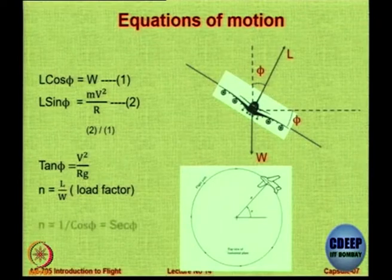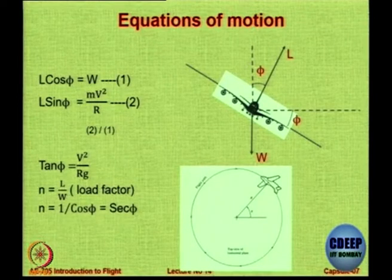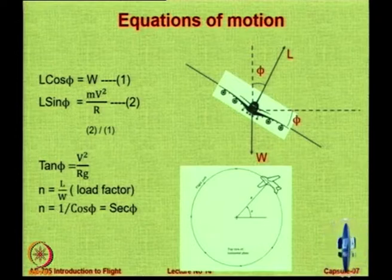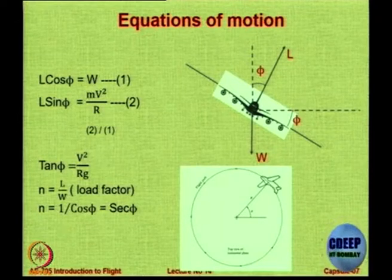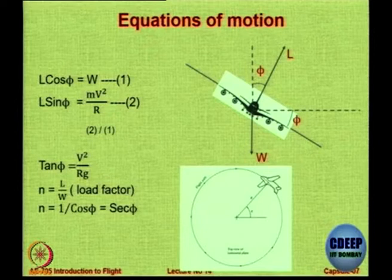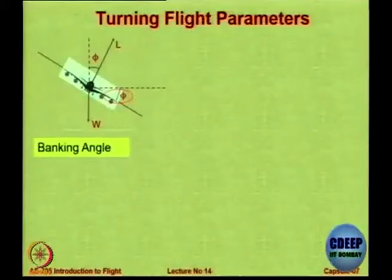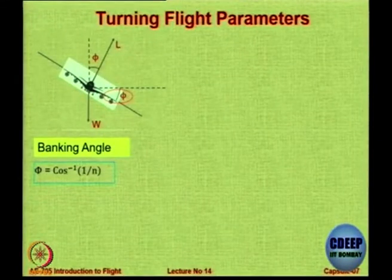The load factor need not be equal to 1 in turning flight. It will be equal to secant of phi, that is 1 by cos phi. So larger your turning speed or smaller turning radius, larger is the angle of bank, and the angle of bank directly gives you the load factor value. If phi is 60 degrees, n is equal to 2 straight away. The banking angle is a very important parameter; it is cos⁻¹(1/n).